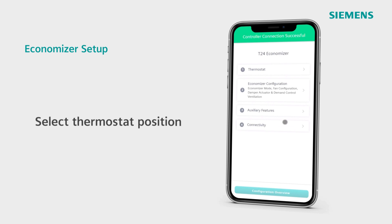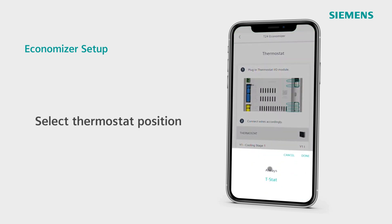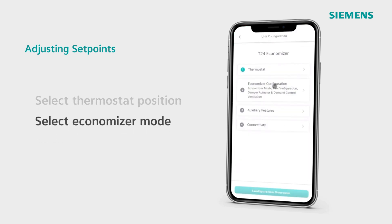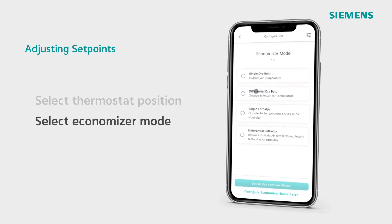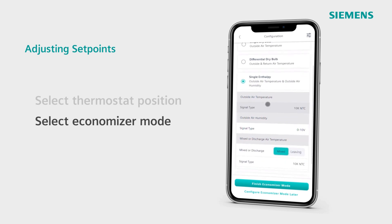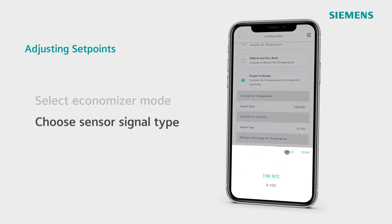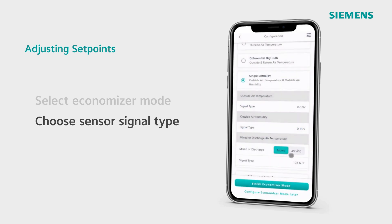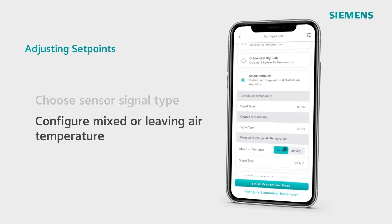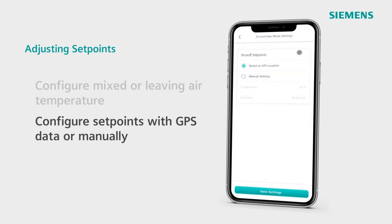Select your thermostat positions for occupancy, then begin configuration for the Economizer. Choose an Economizer mode according to your sensors, then choose the signal type for each of these sensors and indicate whether or not your system uses mixed or leaving air. GPS functionality also allows you to configure shutoff set points according to the ASHRAE climate table based on GPS location or by manual settings.